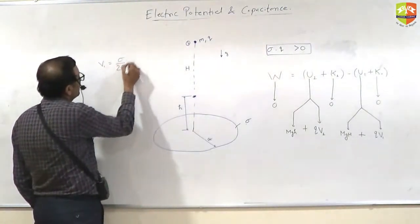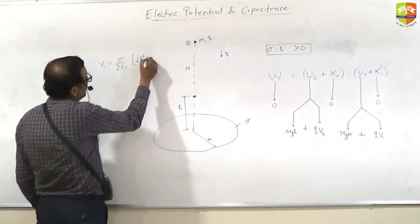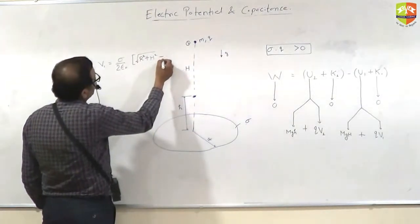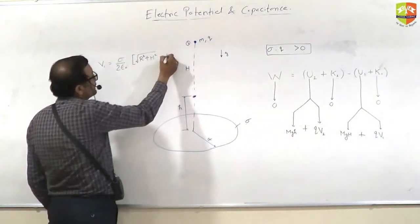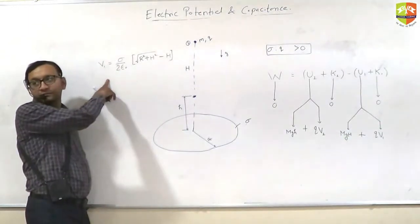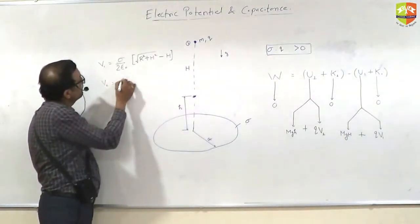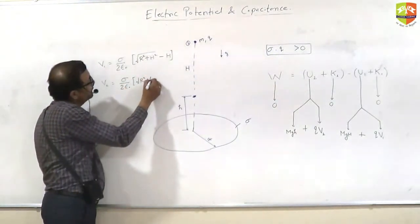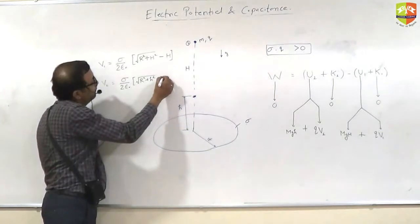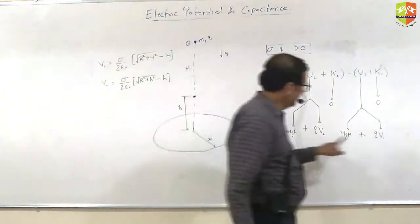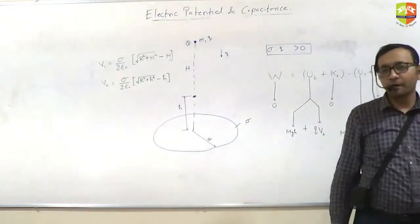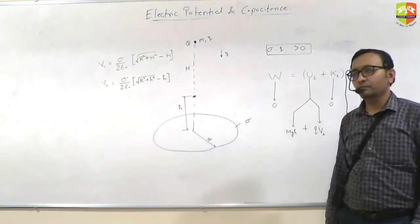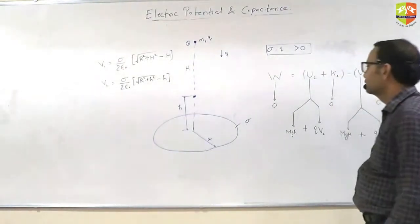V1 is equal to sigma, the formula. Sigma by 2 epsilon 0 then under root of R squared plus H squared minus under root H. Just substitute here and you get the value of sigma. This came in JEE Advanced a couple of years. Understood?